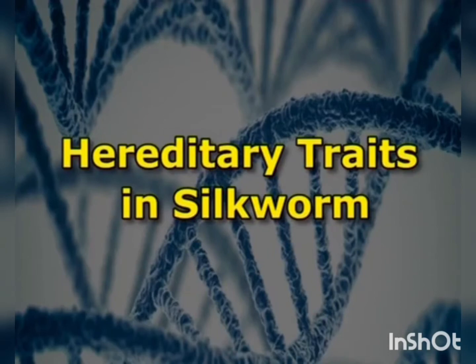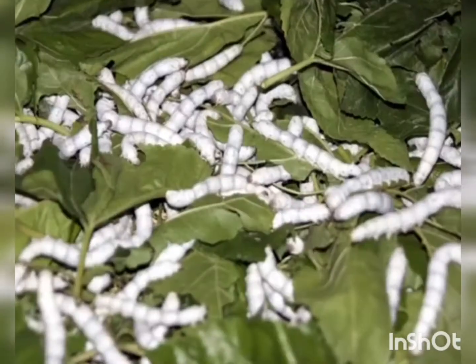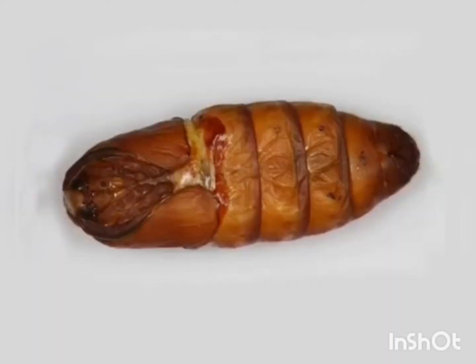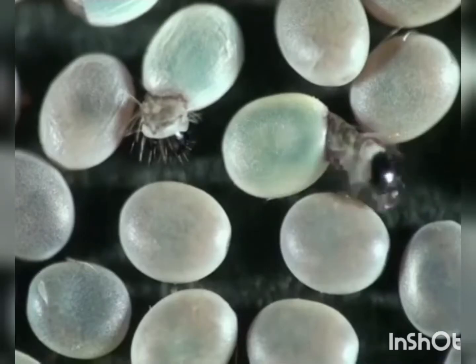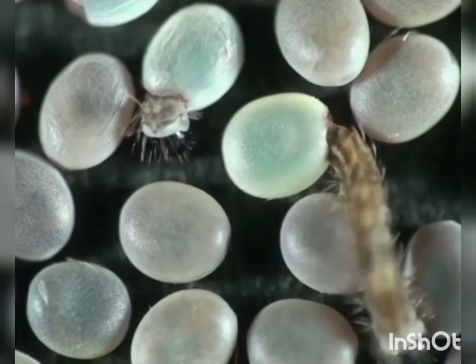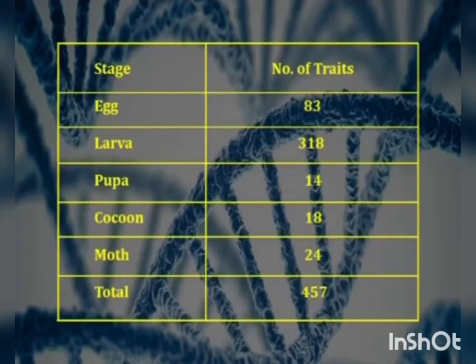Over 450 hereditary traits are known in the mulberry silkworm Bombyx mori, observed in the egg, larvae, pupae, cocoon, and moth stages. Majority are related to larval and egg characters. The number of traits present in different stages is given in the table below.